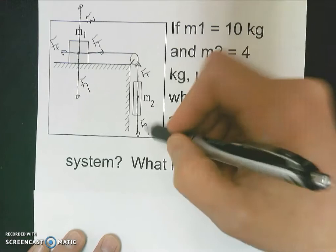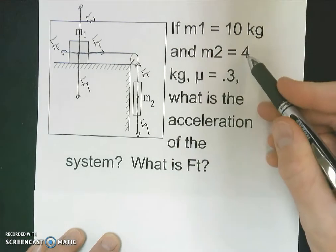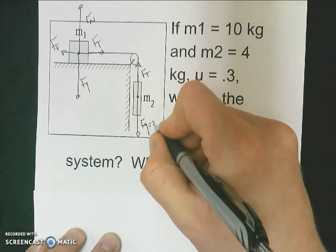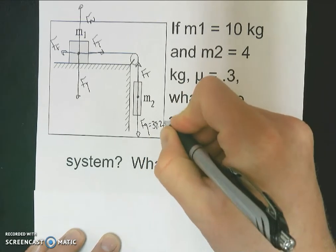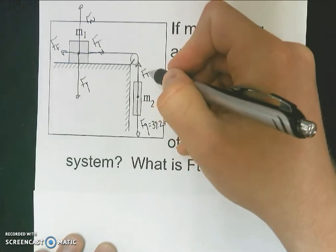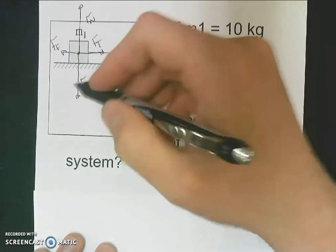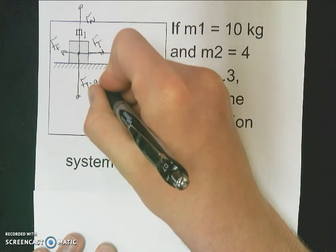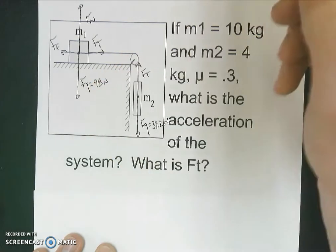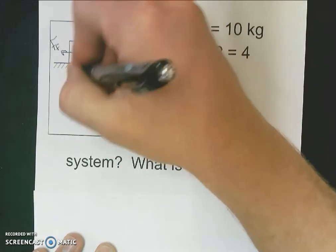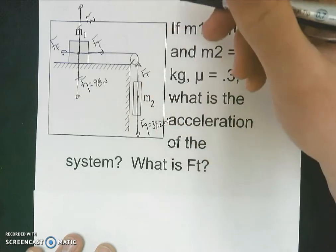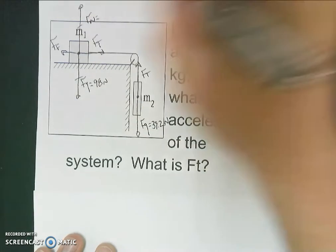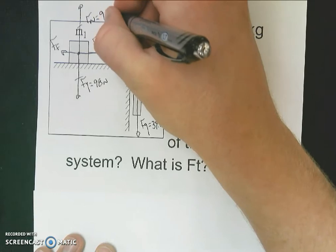I have my force of gravity here. I know it's mass four times gravity, so four times 9.8, which gives 39.2 newtons. I don't know what the tension is yet. The force of gravity on the other object is 10 kilograms times 9.8, so that's 98 newtons. And then my force normal — since it's not accelerating in the vertical direction — the normal force is also 98 newtons.